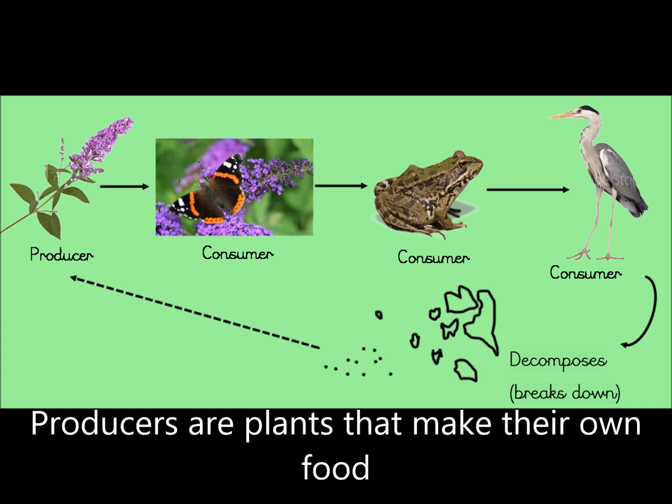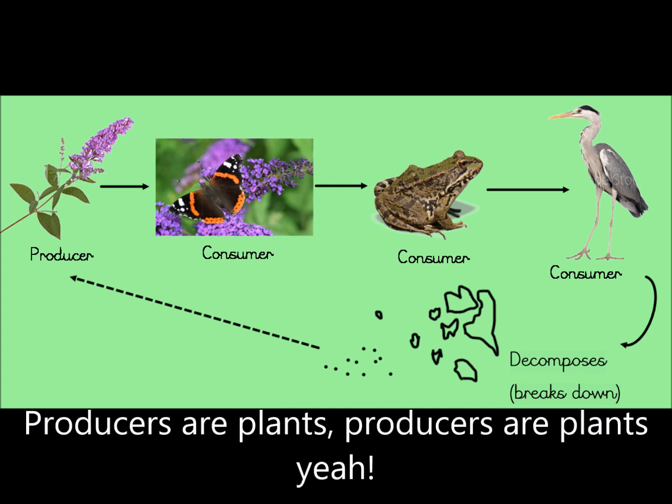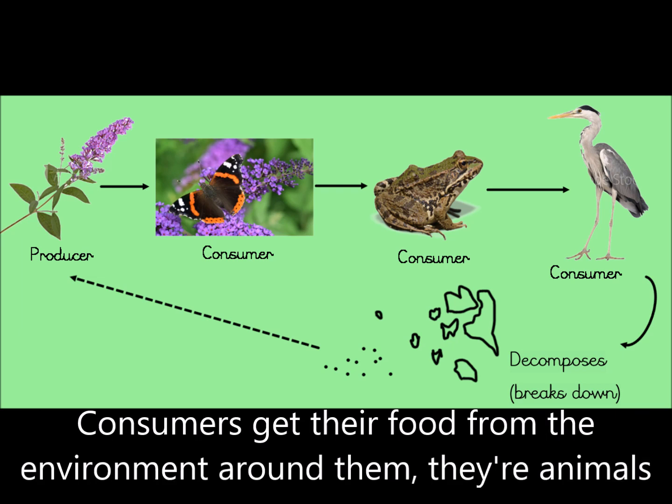Producers are plants, they make their own food. Consumers get their food from the environment around them. The animals!